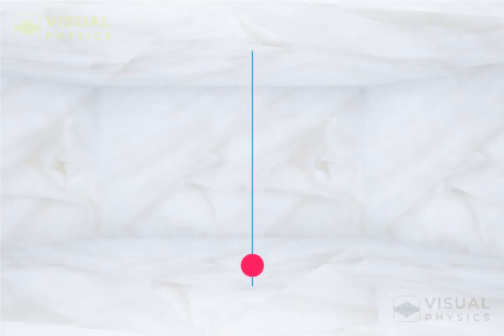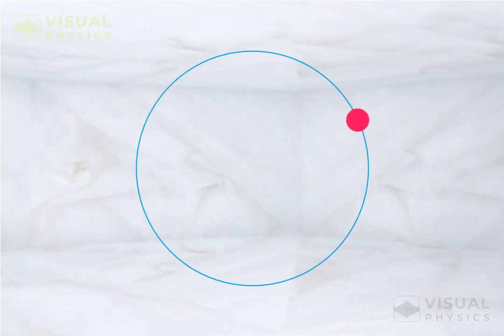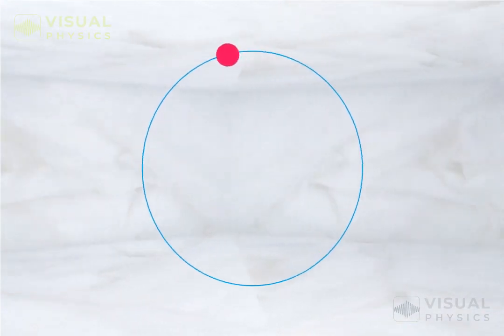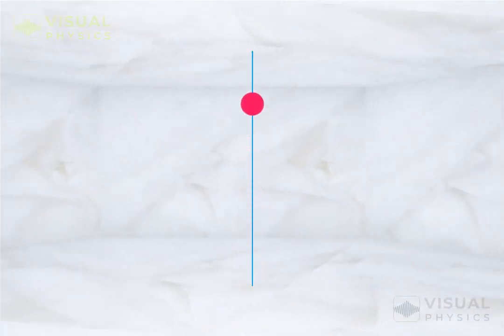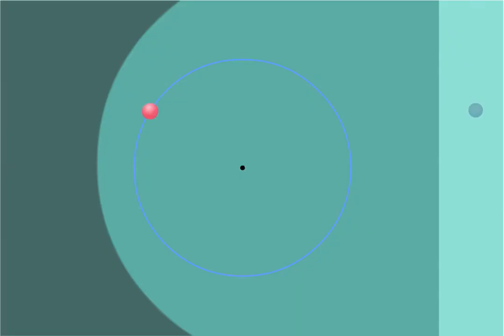A very interesting point about simple harmonic motion is that it can be considered as a projection of a uniform circular motion. A uniform circular motion, when viewed sideways, is a simple harmonic motion. We can also consider a simple harmonic motion to be a shadow of a uniform circular motion.